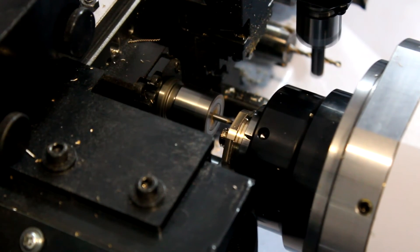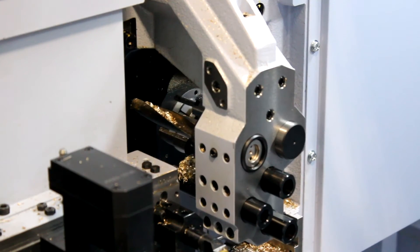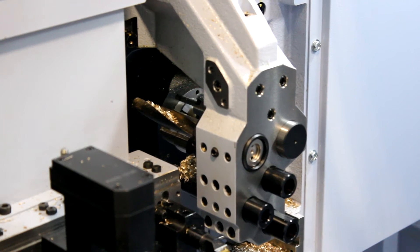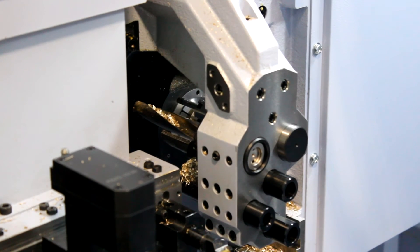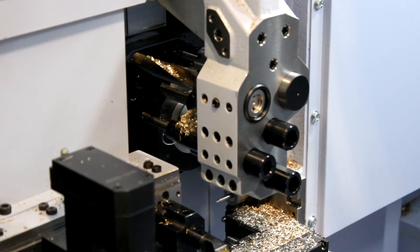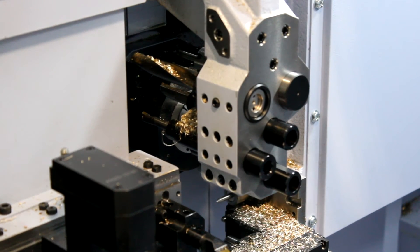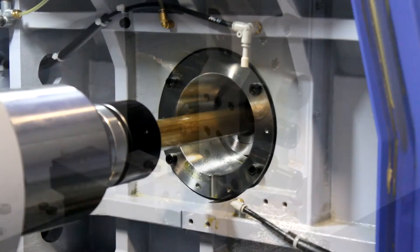To improve the thermal stability of the machine, we've added lots of extra covers to the internals of the machine. This keeps the hot, neat cutting oil off the base casting, stopping any distortion that may occur as the temperature of the oil increases.